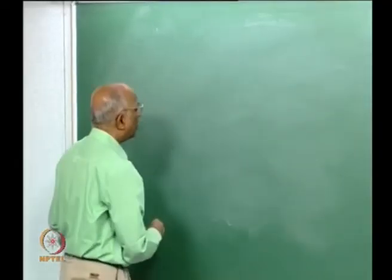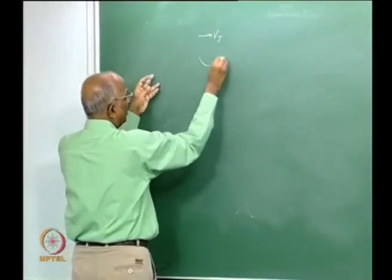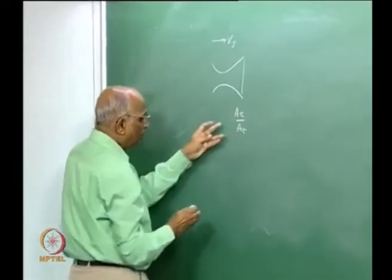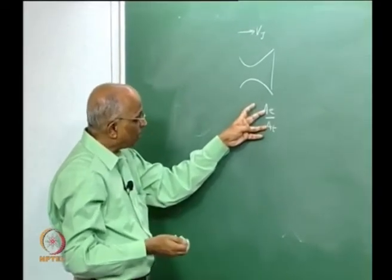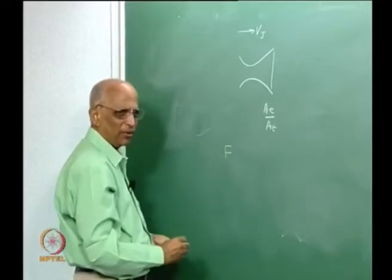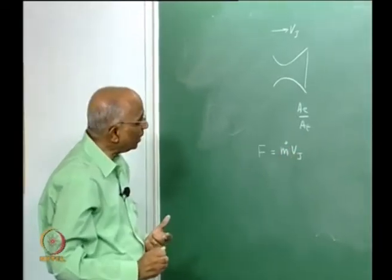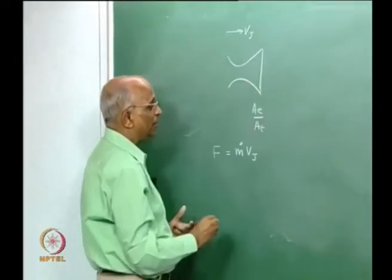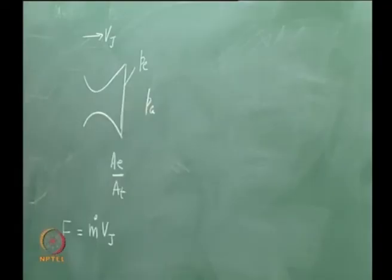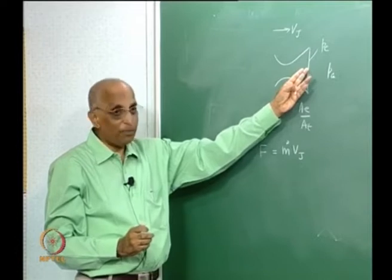What have we considered so far? We considered jet velocity as a function of chamber properties, we said a convergent-divergent nozzle is required, we looked at the area ratio Ae/At. We talked about under-expanded, over-expanded, and optimum nozzles. Now the question is: what is the thrust generated? We have momentum thrust m_dot × Vj, but each time depending on the nozzle area ratio, the exit pressure Pe could be different from the ambient pressure Pa. Therefore thrust could also come from pressure.